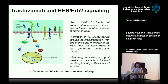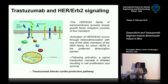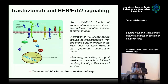Trastuzumab binding to HER2 blocks the HER2-HER4 dimerization, blocking the cardioprotection mechanism essential during oxidative stress. When Trastuzumab is administered together with or after Doxorubicine, the oxidative stress increases because Trastuzumab blocks these cardioprotective effects, resulting in cardiac dysfunction.